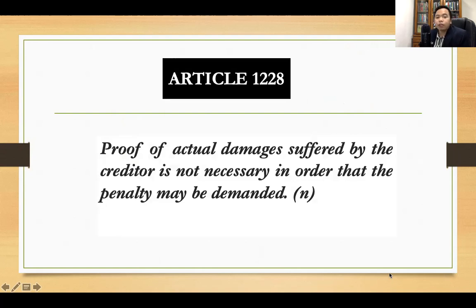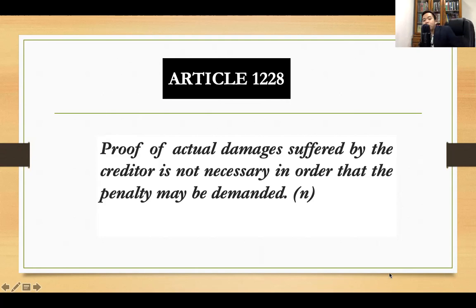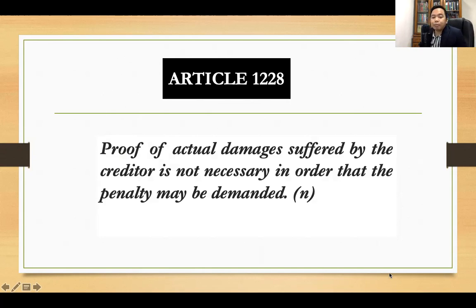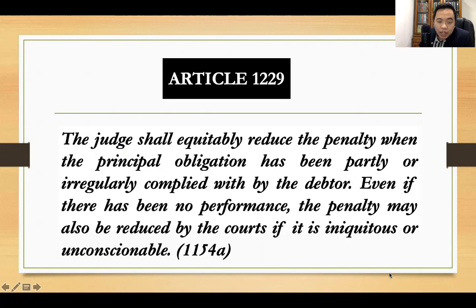Article 1228: proof of actual damages suffered by the creditor is not necessary in order that the penalty may be demanded. When there is an obligation with a penal clause, that penal clause specifies a specific amount to be paid by the obligor to the creditor in case the principal obligation may no longer be performed. In case of breach, the obligee or creditor does not need to establish that actual damages were incurred. The stipulation of the parties pertaining to the penal clause will always be demandable in case of breach or violation, and proof of actual damages is no longer necessary.